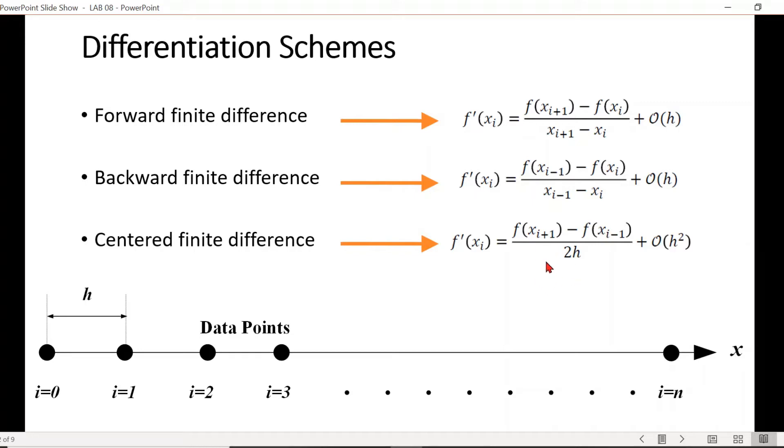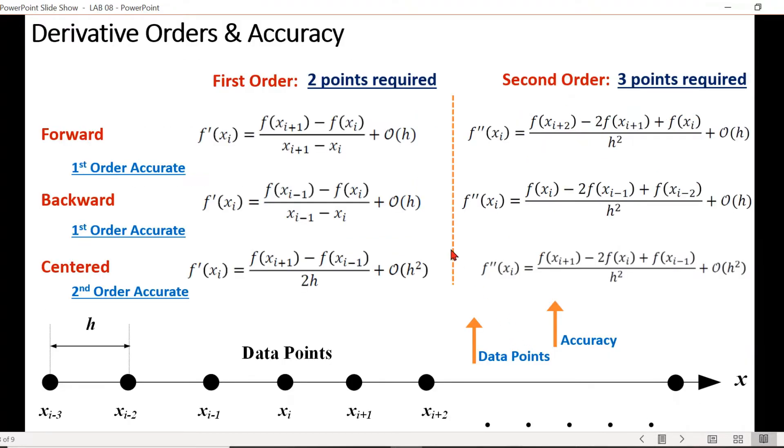We can determine different orders of derivatives. In the previous slide we discussed basically first order derivatives with three respective approaches. So for first order derivative we need actually two data points. For second order derivative we require three data points.